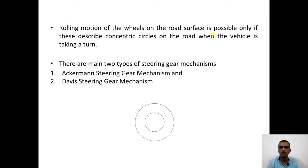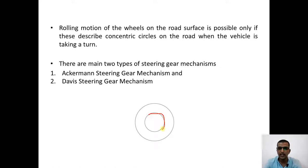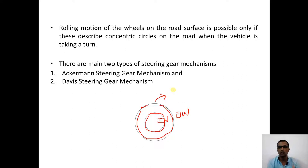The rolling motion of wheels on the road surface is possible only if they describe concentric circles on the road. When taking a right turn, the right wheel acts as the inner wheel and the left wheel acts as the outer wheel. The right wheel turns by a smaller amount and the left wheel turns by a larger radius. The paths taken by the inner and outer wheels during a right turn are not the same radius, but they should be concentric — they should share the same center.